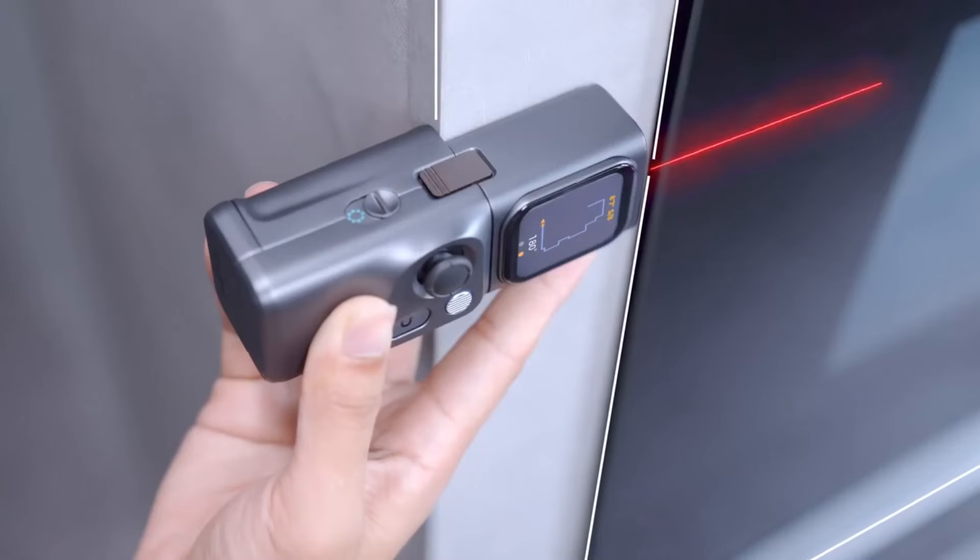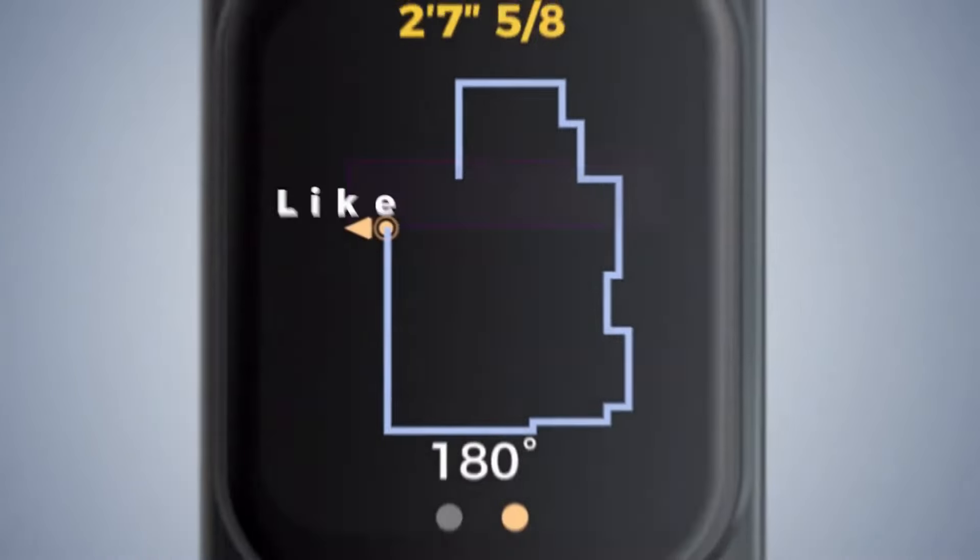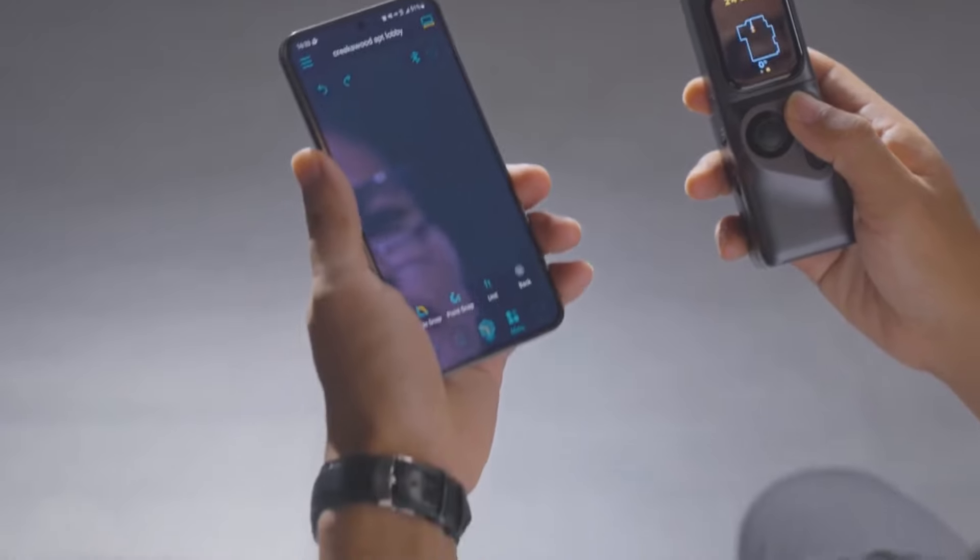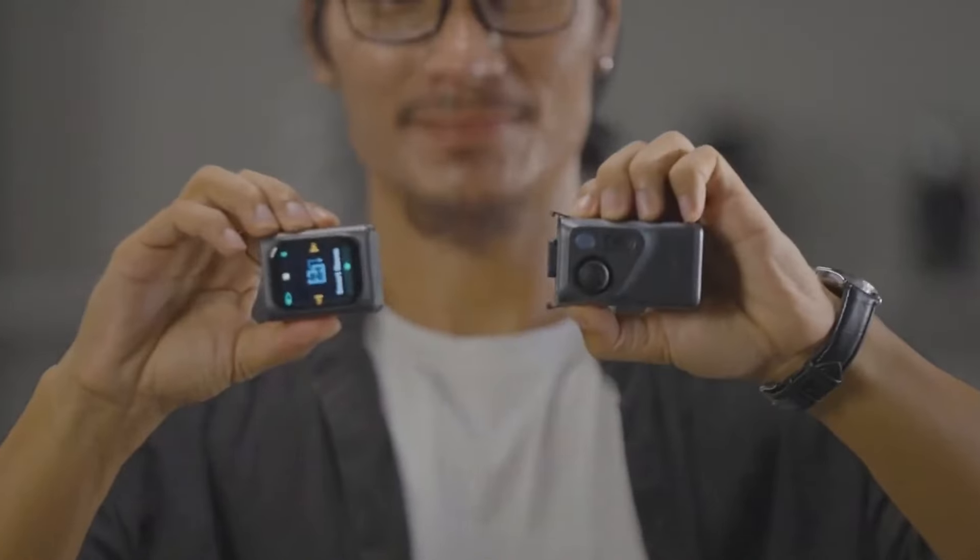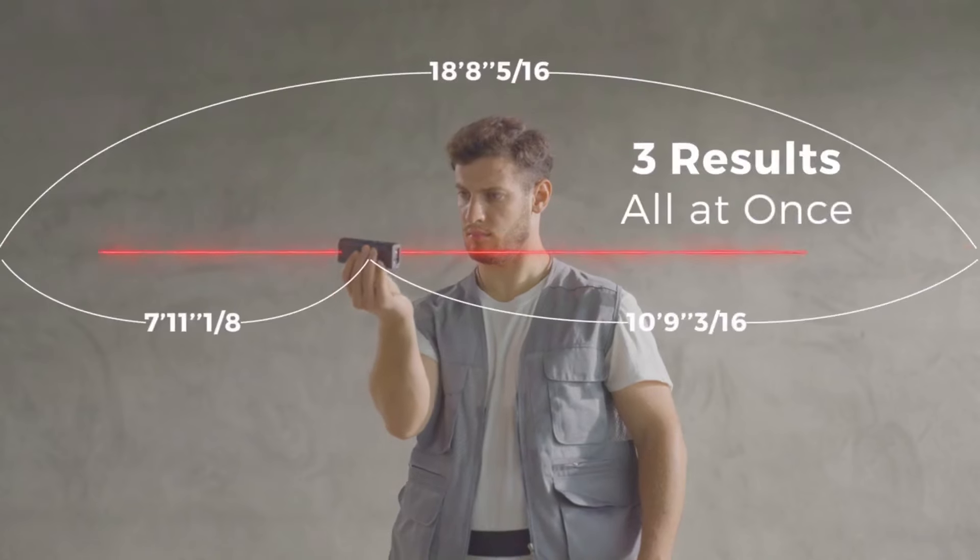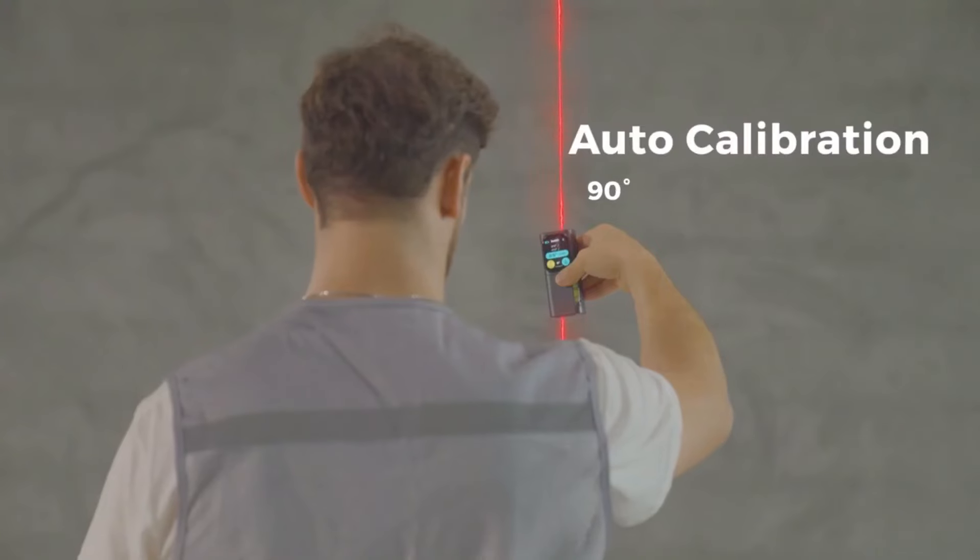The core of the MCQube is a high-precision laser measure that provides accurate distance, area, and volume measurements with a simple press of a button. This core module is the foundation upon which users can build, expand, and enhance their measurement capabilities.